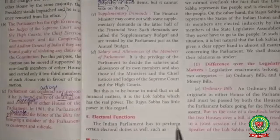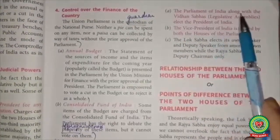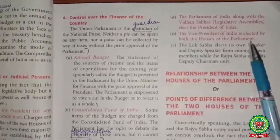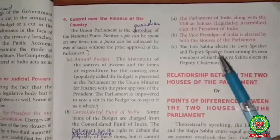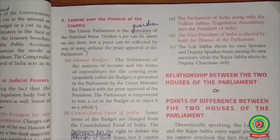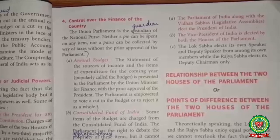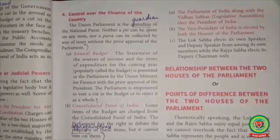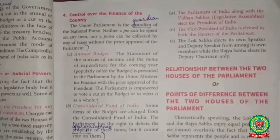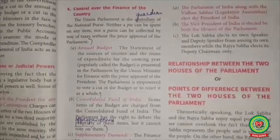5. Electoral Functions. The Indian Parliament has to perform certain electoral duties. The Parliament of India along with the Vidhan Sabhas (Legislative Assemblies) elects the President of India. The Vice President of India is elected by both houses of Parliament. The Lok Sabha elects its Speaker and Deputy Speaker from among its own members, while the Rajya Sabha elects its Deputy Chairman only. The laws to regulate the conduct of elections in the country are also made by Parliament. Thank you.